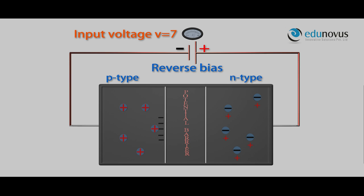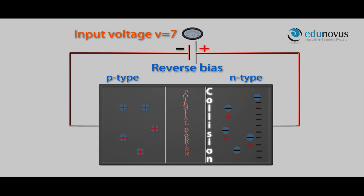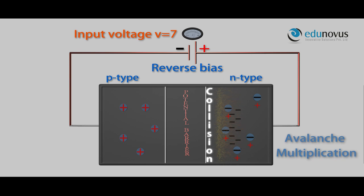As you increase the voltage further, at a certain voltage the electrons move with high speed and collide with the crystal ions. This creates more electron-hole pairs. This process occurs continuously, due to which we have an extremely large amount of charge carriers. It is known as avalanche multiplication. This reverse bias voltage is also known as the zener breakdown voltage.